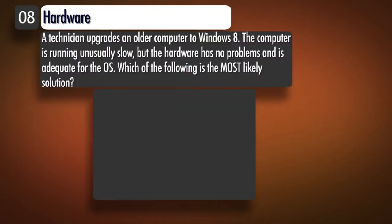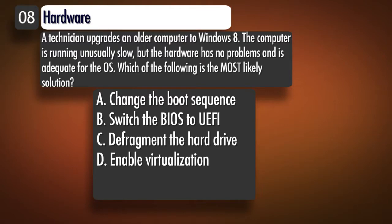Question 8, Topic 1. A technician upgrades an older computer to Windows 8. The computer is running unusually slow, but the hardware has no problems and is adequate for the OS. Which of the following is the most likely solution? A. Change the boot sequence. B. Switch the BIOS to UEFI. C. Defragment the hard drive. D. Enable virtualization. Correct answer: C.